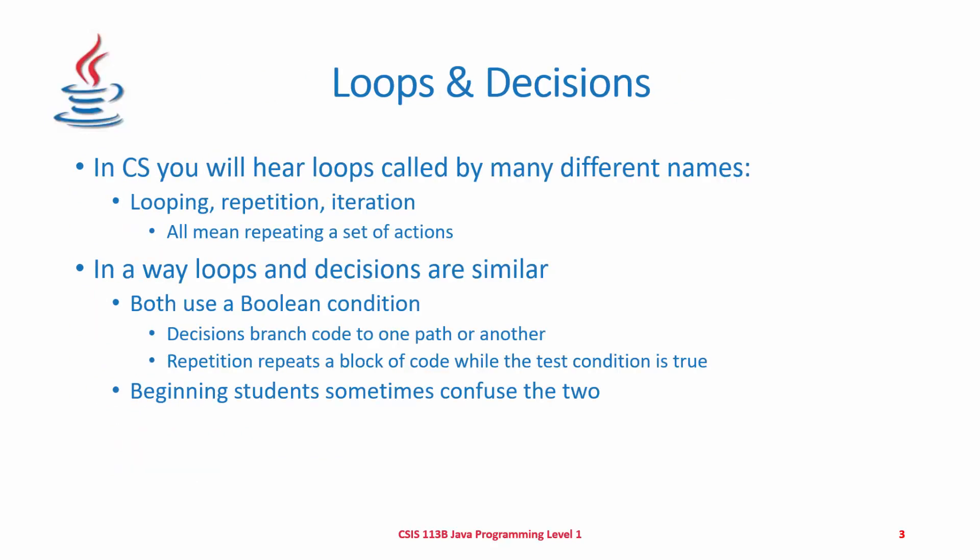When it comes to loops and decisions, looping is referred to as repetition or iteration. It means we're going to repeat some block of code — maybe a single statement, maybe multiple statements — and continue repeating that block until we reach our goal. Loops and decisions are similar because they both use a boolean condition. In loops, the boolean expression determines when to terminate the loop. In decisions, it determines which direction to go. Decisions branch code to one path or another; repetition repeats a block of code while the test condition is true.